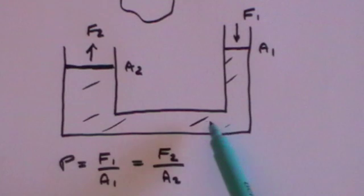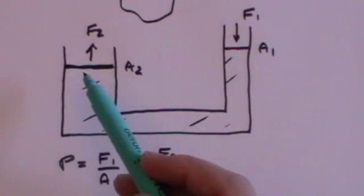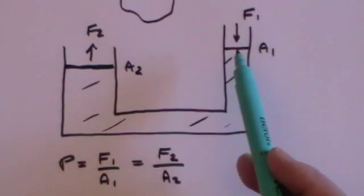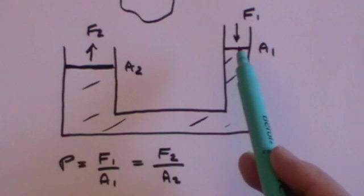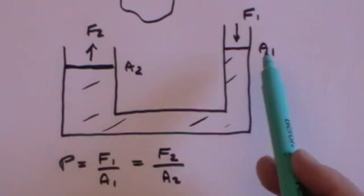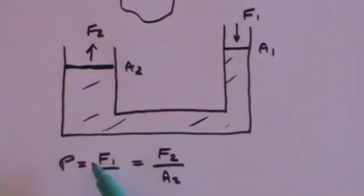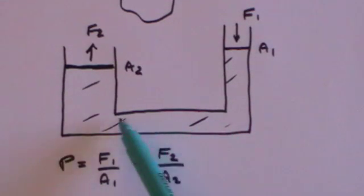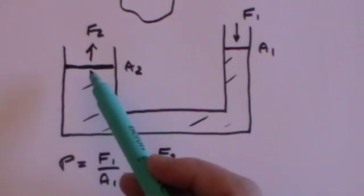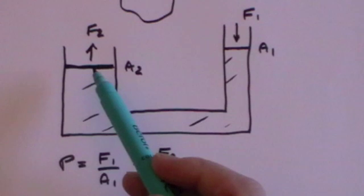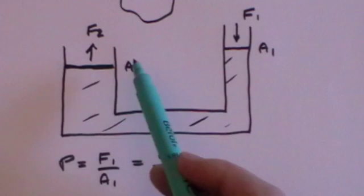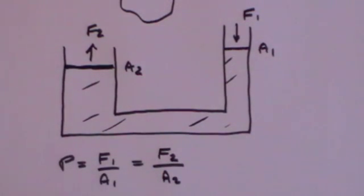Pressure cannot be lost — pressure is transmitted through the fluid in all directions. So pressure is force over area. I push down on this piston with force F1, the area of the piston is A1, that produces a pressure F1 over A1. That pressure is transmitted all the way through the fluid until it gets to the other piston, which is subjected to the same pressure. So that pressure equals the force acting upwards divided by the area: F2 over A2.